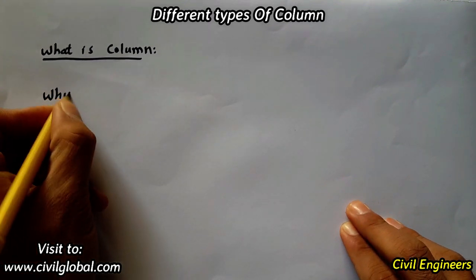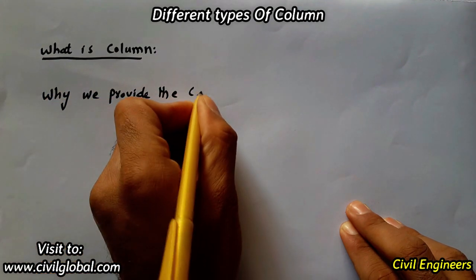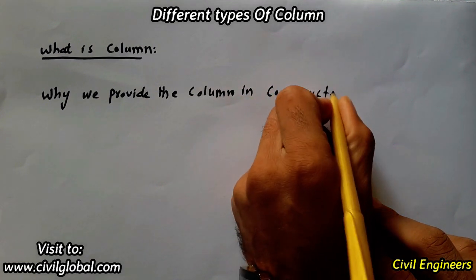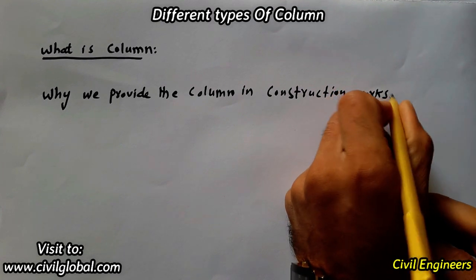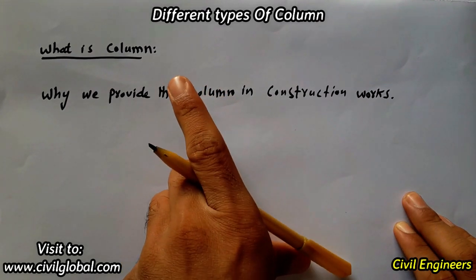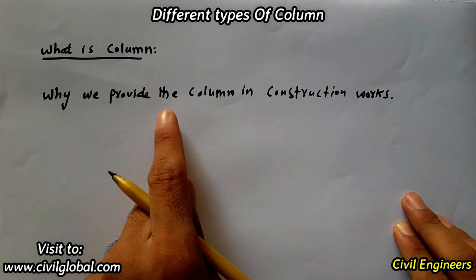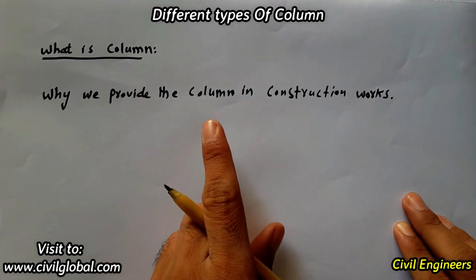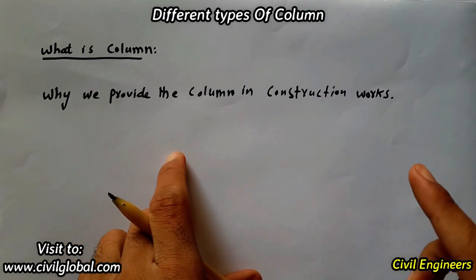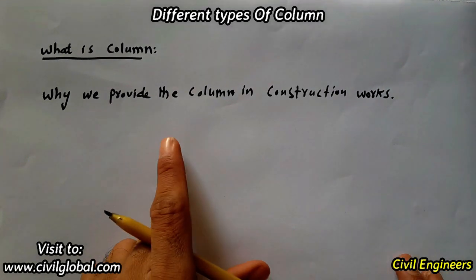The second point: why we provide the column in construction works. In civil engineering construction we provide columns because columns carry the axial load, therefore we design the column for compressive load — such as wind loads and so on. The column is also designed for horizontal force, therefore we provide columns in bridge construction.